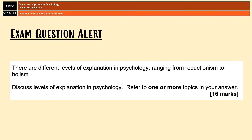Levels of Explanation came up as a 16-mark essay in the 2023 exam series. It threw people off massively, with the examiner's report saying that loads of students seemed completely unprepared for this type of question. The reason it threw people off is because Levels of Explanation is one element of the Holism and Reductionism topic, and nobody expected that particular element to be picked out for an essay. There is going to be an exam video on how to tackle that question, so keep an eye out for it.